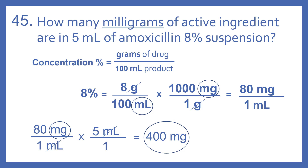So we're looking for how much active ingredient is in 5 milliliters. So 80 milligrams per 1 milliliter times 5 milliliters over 1. We have a milliliter on the top, milliliter on the bottom, so those cancel. We're left with milligrams. So 80 times 5 is 400 milligrams.